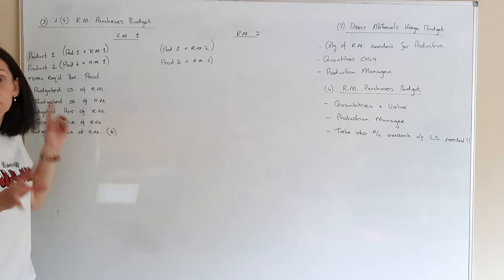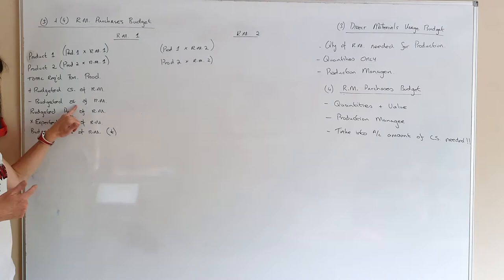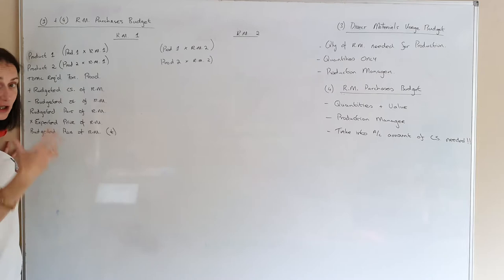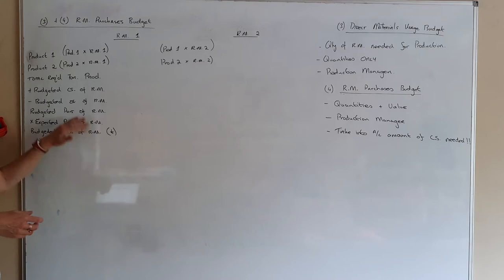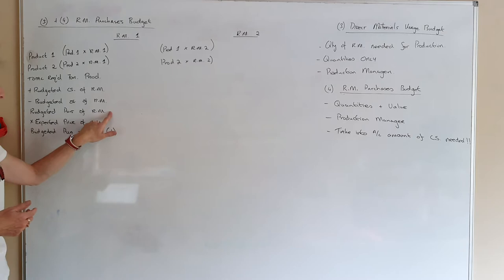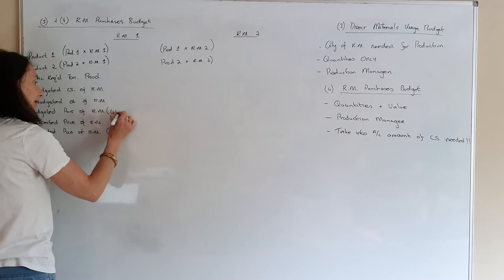You need to add on your closing stock of raw materials so you're ready for full production, and you take away the stock you already have — your opening stock. For the honours level, this figure won't be given directly; they'll give a percentage increase or decrease in closing stock in the introduction. They'll also tell you the expected price of raw materials so you know how much you're going to spend. The budgeted purchase of raw materials is in both quantity and euro.